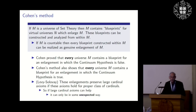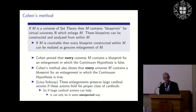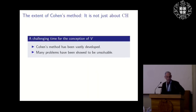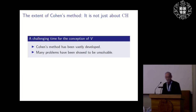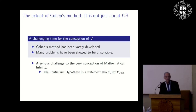Cohen's enlargements preserve large cardinal axioms if those axioms hold for a proper class — including all the large cardinal axioms listed earlier. So large cardinal axioms can only help in some unexpected way; you can't hope that measurable cardinals, for example, settle the continuum hypothesis. In the 60 years since Cohen discovered the method it has been vastly developed, and many problems — even outside set theory — have been shown to be unsolvable. It's a serious challenge to the very conception of mathematical infinity.